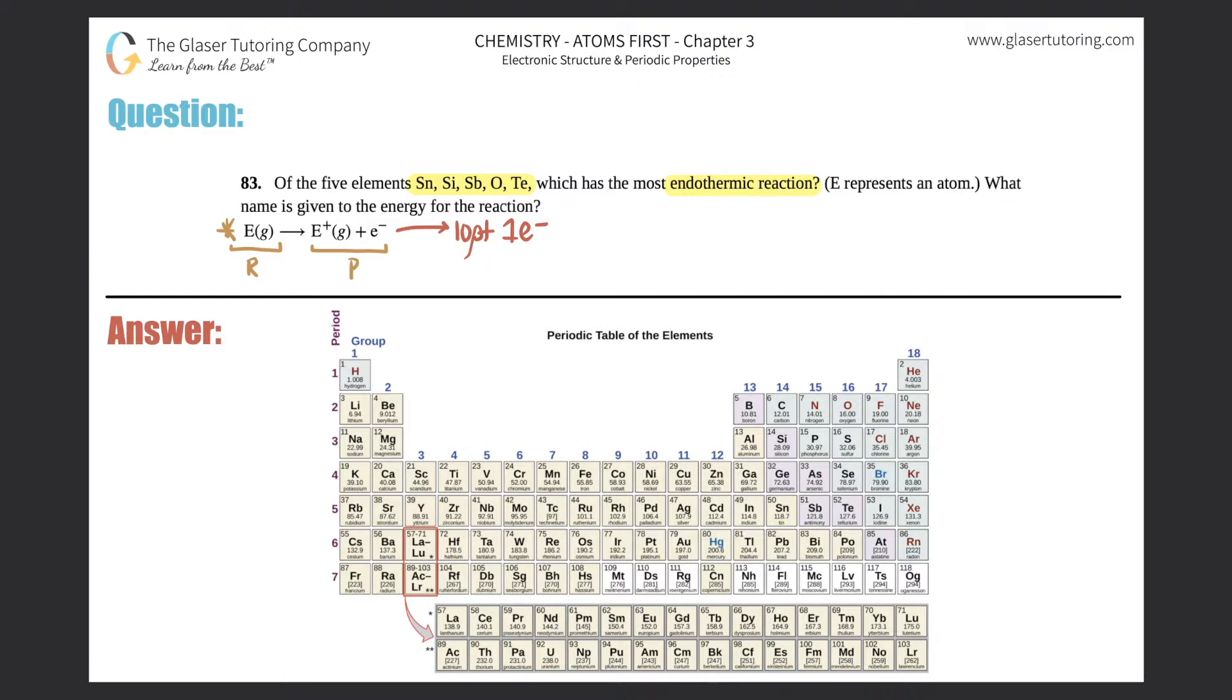We have definitely talked about a process in which we lost electrons. There's a trend for that. Do you guys know what it is? This is all about ionization energy. So the reaction that they actually provided is the reaction for ionization energy. That actually gives the answer to the second part when they said what name is given to the energy for this reaction: it's ionization energy, or you could just say IE.